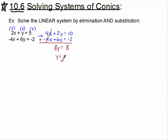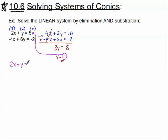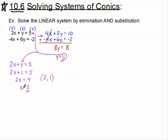Now that I have half of my answer, I'll plug y equals 1 into the original top equation: 2x plus y equals 5. So 2x plus 1 equals 5. Subtracting 1 and dividing by 2, I get x equals 2. Together, x equals 2 and y equals 1 form the ordered pair (2, 1). This is elimination.